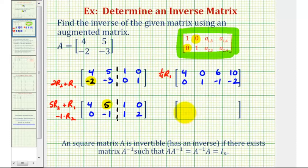So the second row stays the same. And now for row 1, we'll have 1 fourth times 4, that's 1. 1 fourth times 0 is 0. 1 fourth times 6 would be 6 fourths or 3 halves. And 1 fourth times 10 is 10 fourths or 5 halves.